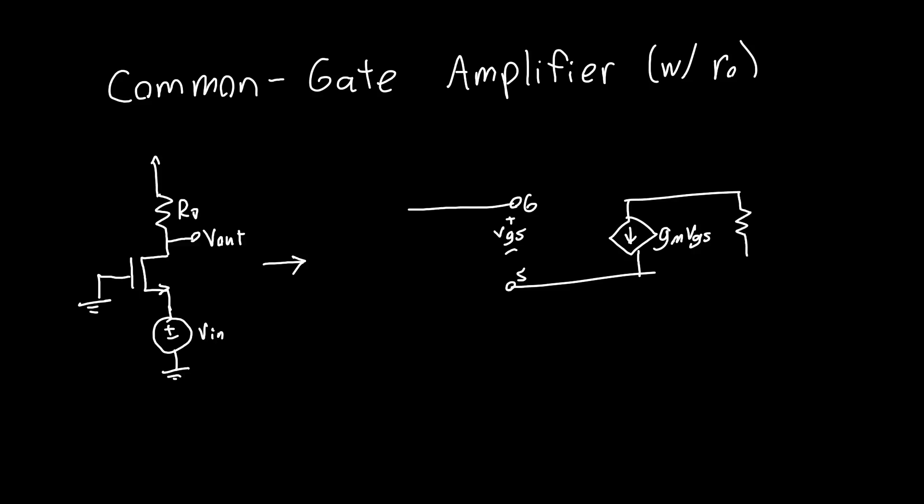And this time, we're also going to include the output resistance RO and RD. This is the drain of the MOSFET. The drain is connected to RD, and that's connected to VDD, which we then write as ground, because all constant voltages are ground in our small signal model.